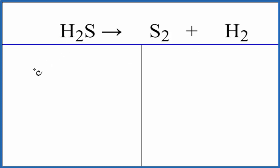Let's count the atoms up. Hydrogen, we have two of those, and then sulfur, we have one. On the product side, hydrogens, we have two, and sulfur, we have two of those.